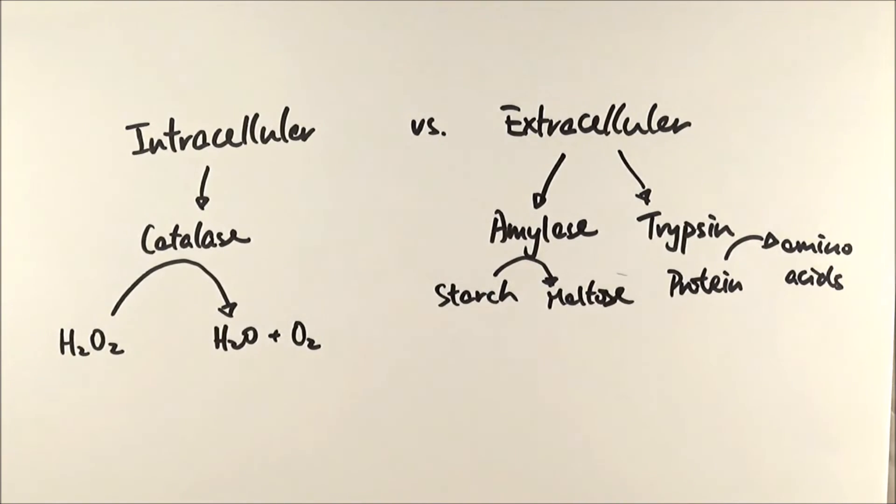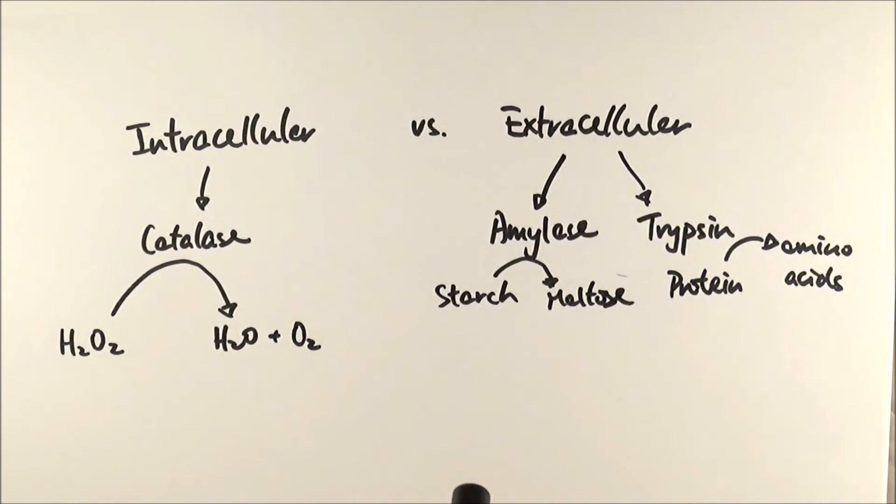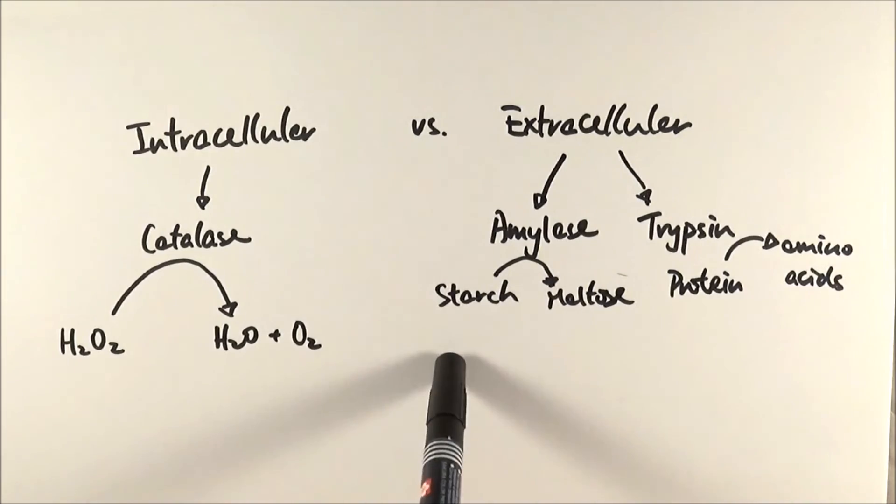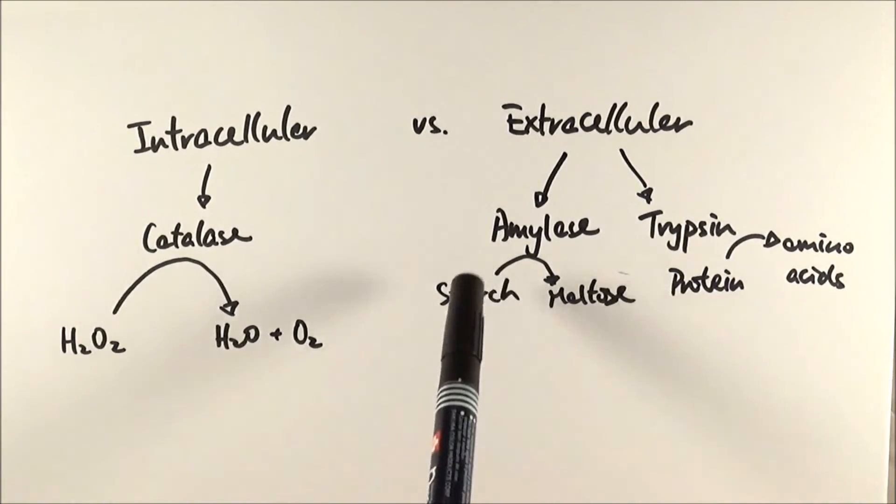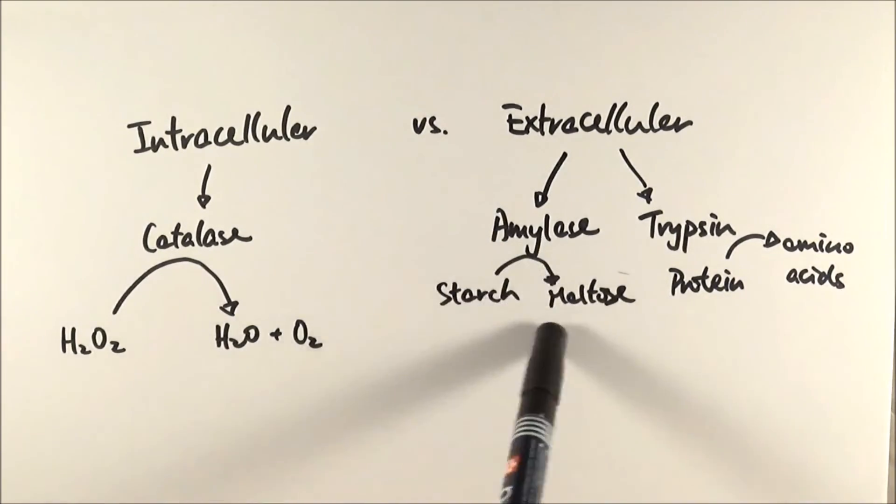Now, if we have imagined amylase and trypsin being intracellular, these reactions will not occur at all because when we eat all these things, it's going into our stomach and then through our small intestine to be digested and absorbed. If amylase and trypsin are inside the cells, they won't be able to actually have access to the food which is outside of the cell. Therefore they must be secreted in order for the digestion process to actually occur.